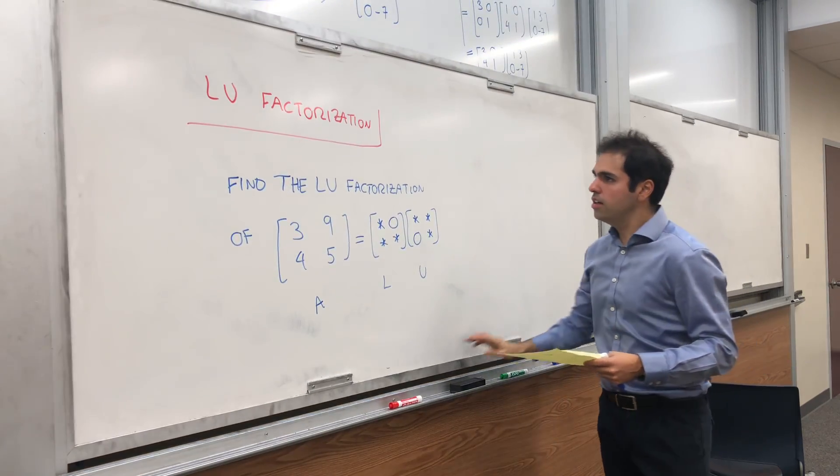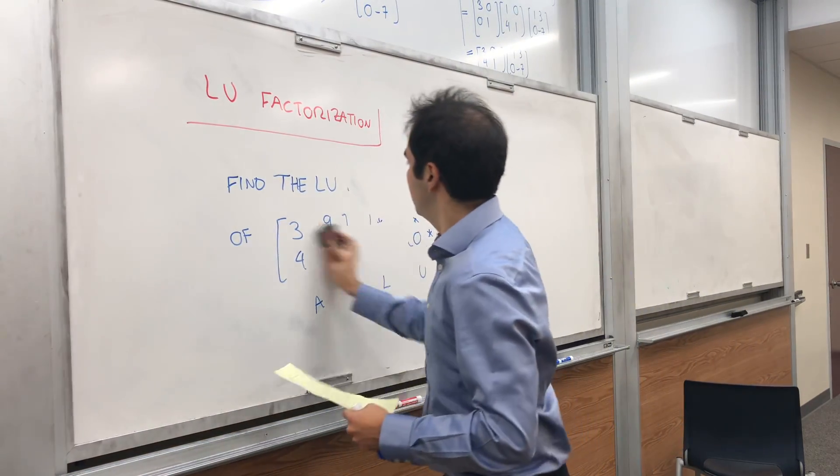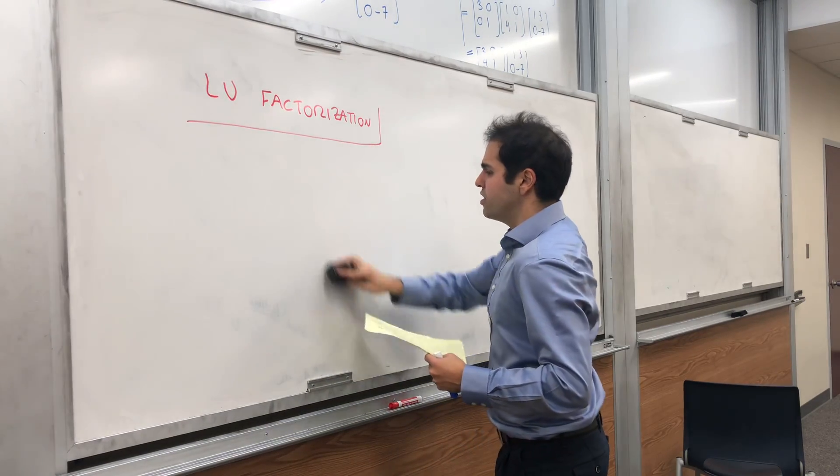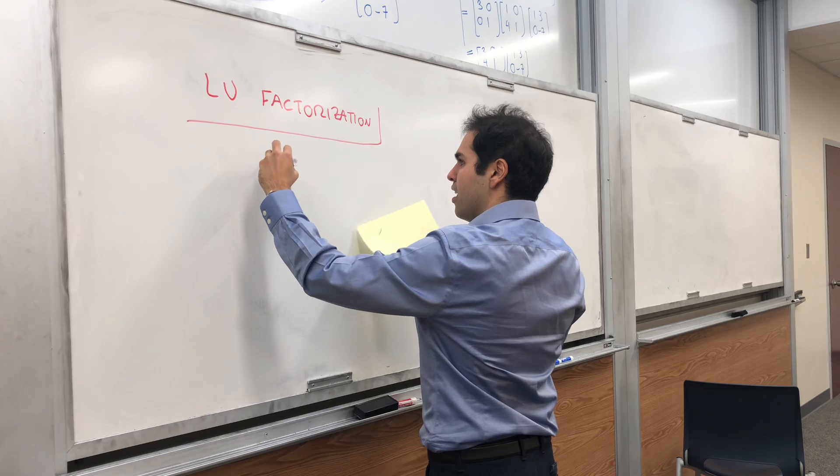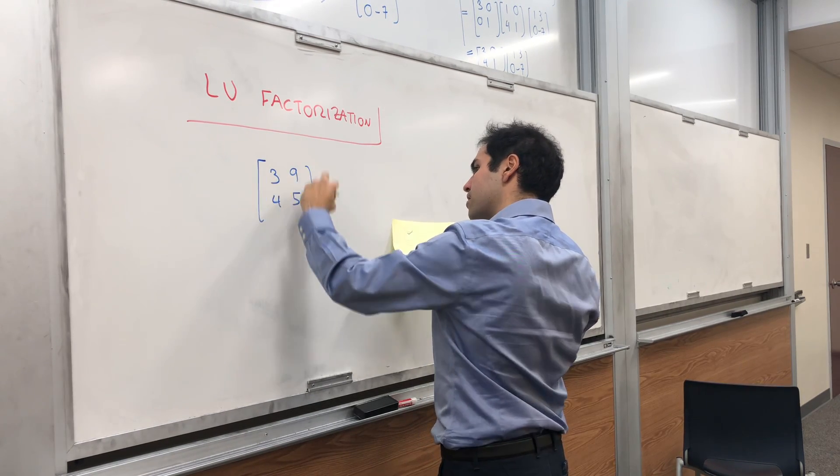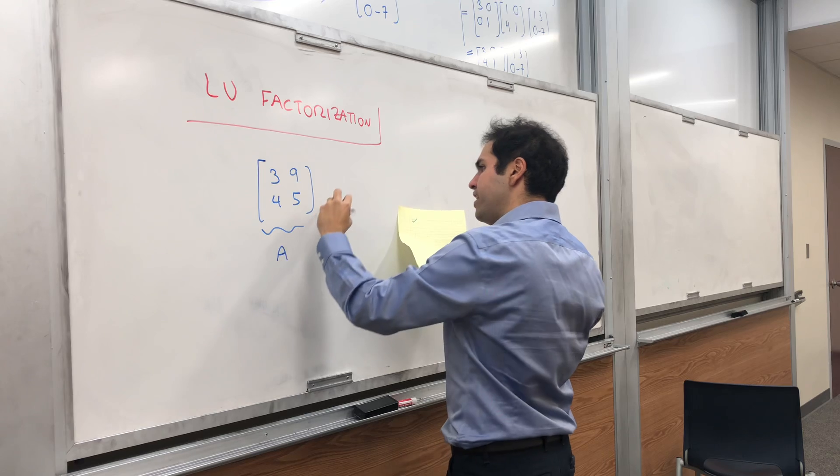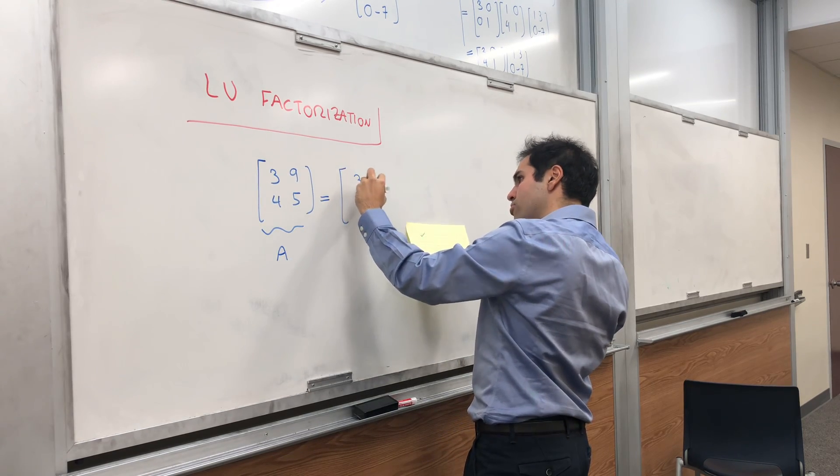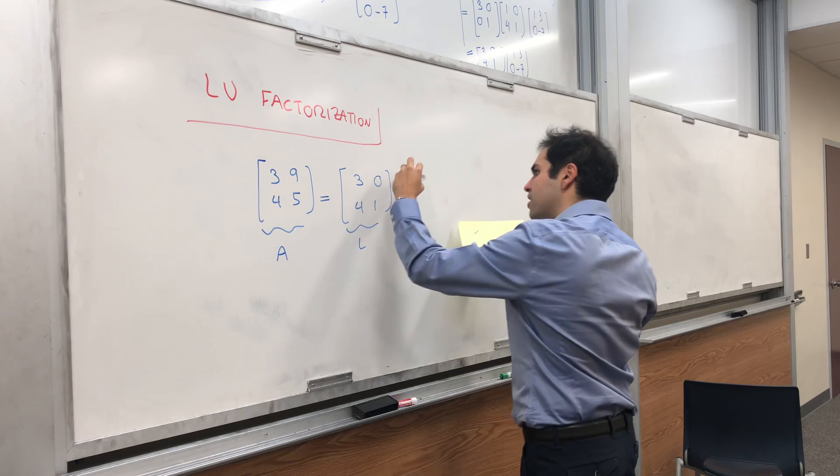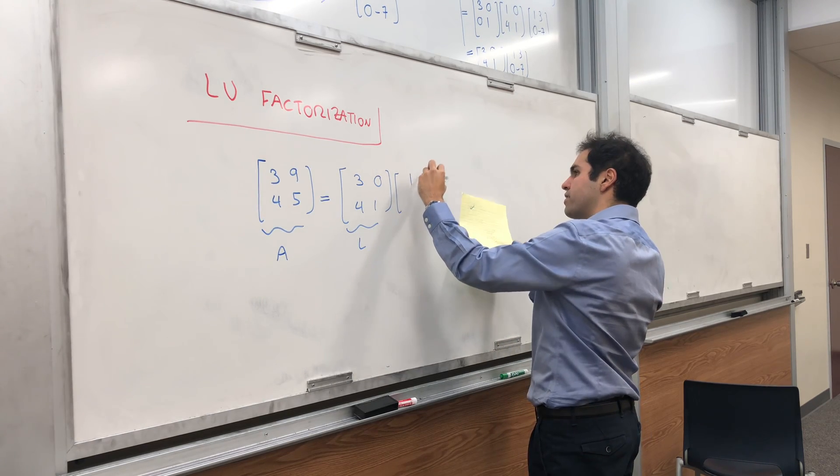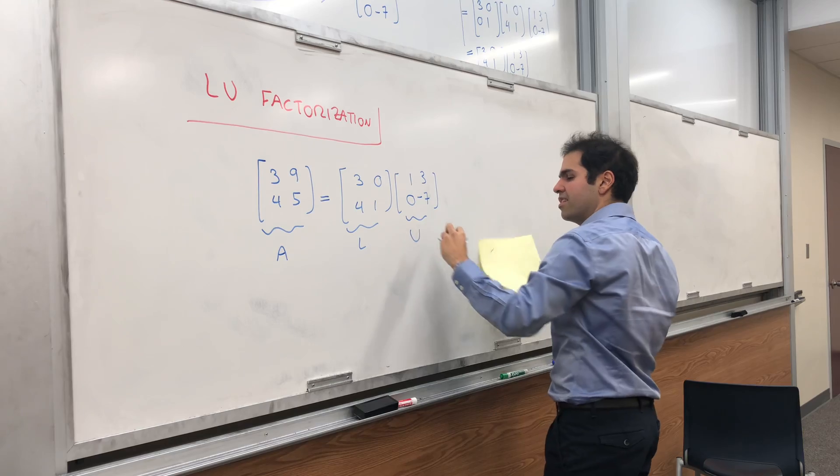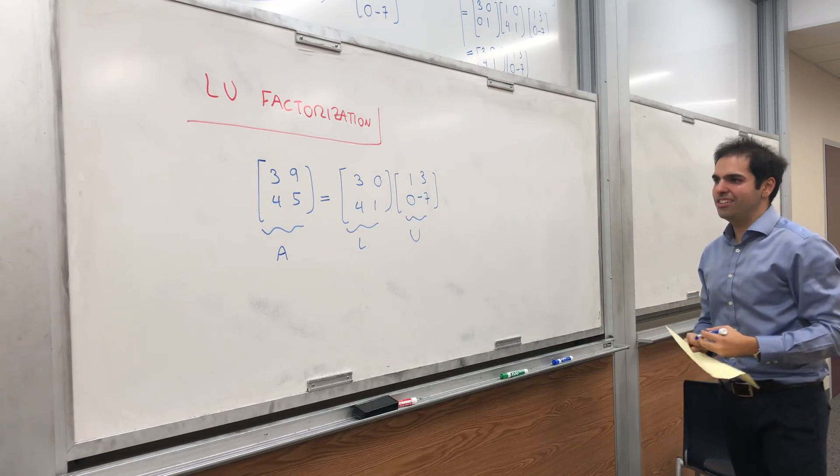So, in other words, what do we get? In the end, we just have A, which was 3, 9, 4, 5, equals to a lower triangular matrix, so this is L, times an upper triangular matrix, which is U. So, A equals to LU.